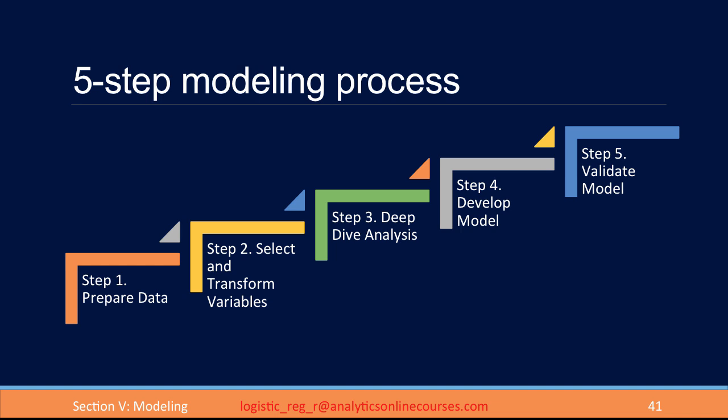The third step is a more deep dive analysis where we look at each of the identified variables and the bivariate relationship between the variables selected in step 2 and the dependent variable that we are trying to predict. Now, while we describe this as a linear process going from step 1 to step 2 to step 3, in reality, depending on the findings in step 3, you might iterate a couple of times between step 2 and step 3 when it comes to variable transformations to get the best possible results. But in this course we are going to cover it more as a linear process.